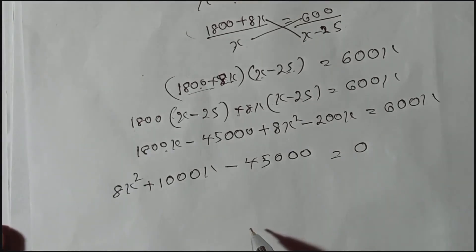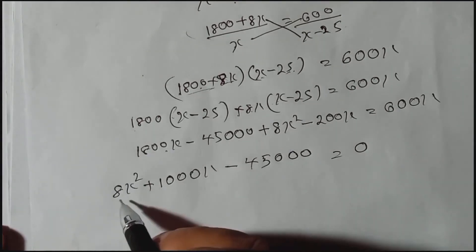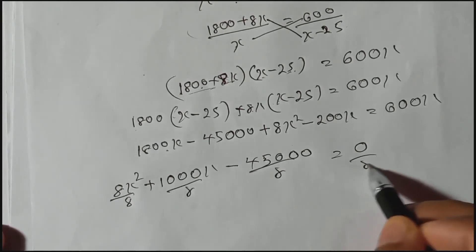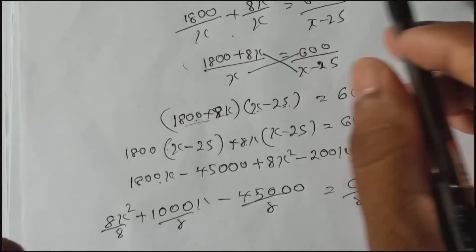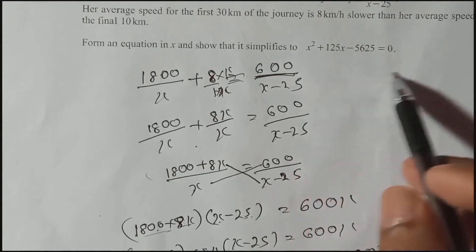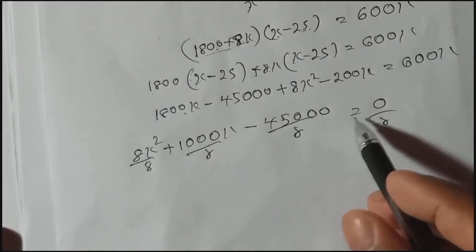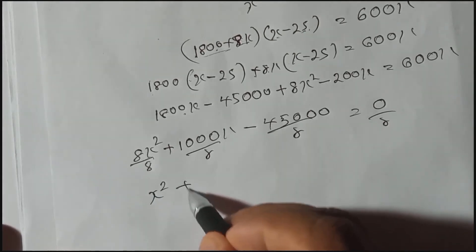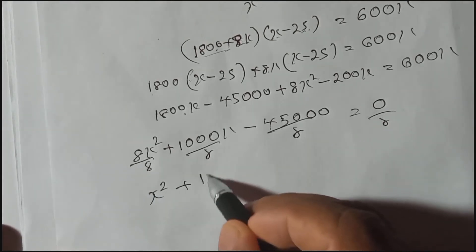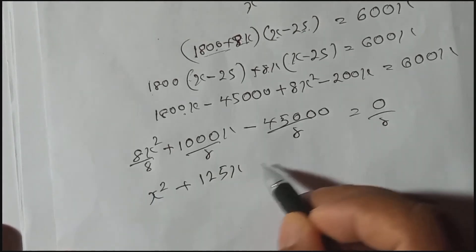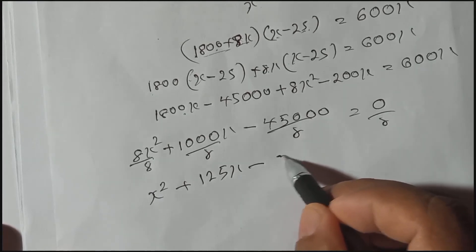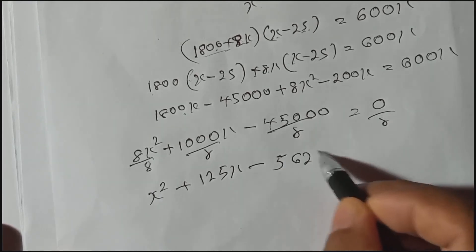Divide everything by 8 to simplify, because the question asks for this format. Dividing gives: x squared plus 125x minus 5625 equals 0.